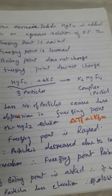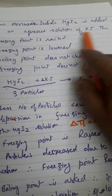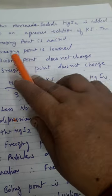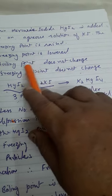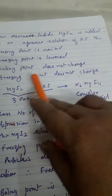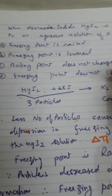When mercuric iodide is added to an aqueous solution of KI, the freezing point is raised or freezing point is lowered, boiling point does not change or freezing point does not change. These four options are given.